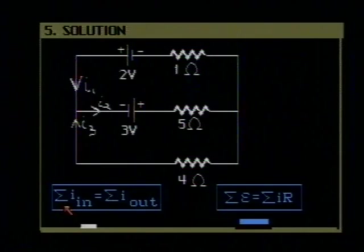Let's now write our equation. We have going in I1 and I3 and going out I2. So we're going to write I1 plus I3 is equal to I2. That takes care of our first equation.